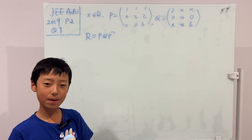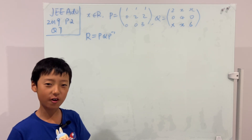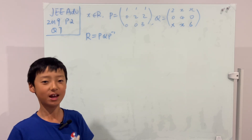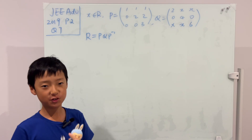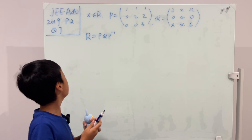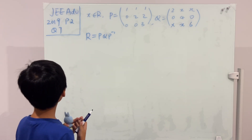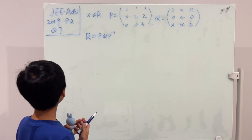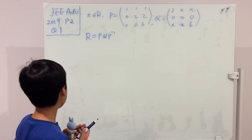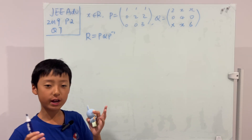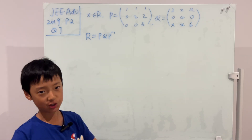Hi guys, welcome back to another video of me solving JEE Advanced questions. Today I have the JEE Advanced 2019 question 7 of paper 2. Why don't we get into the question?